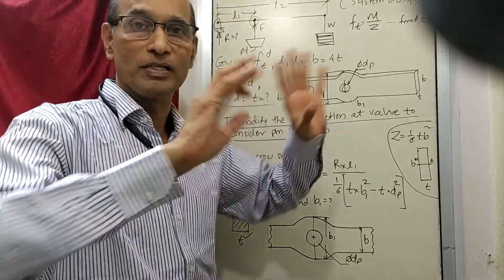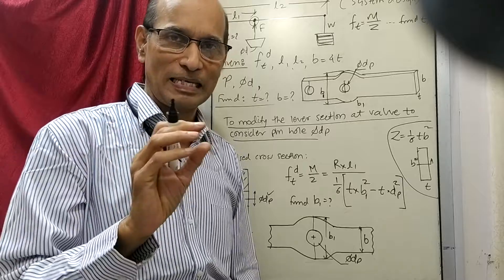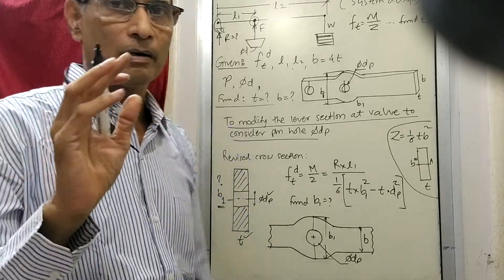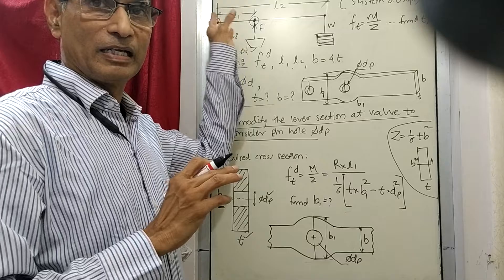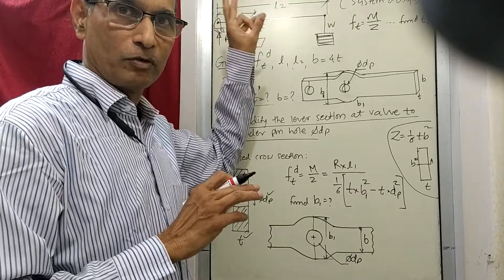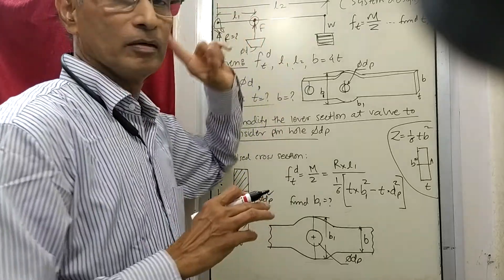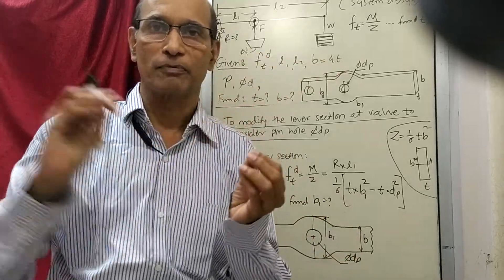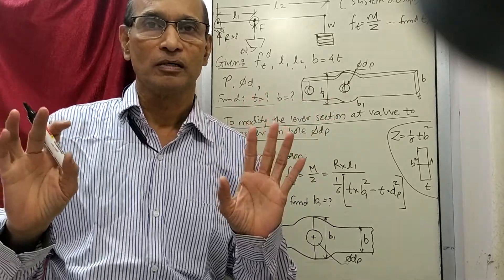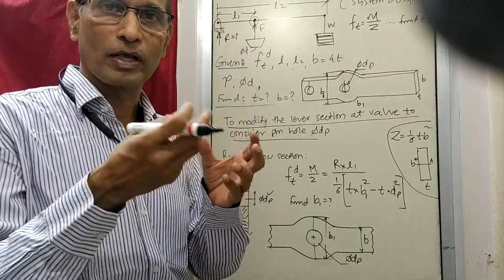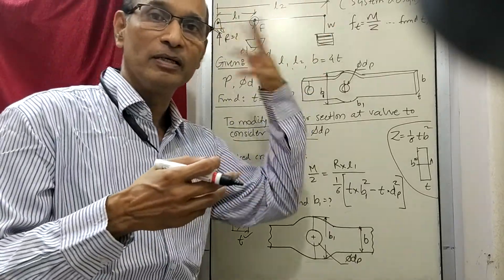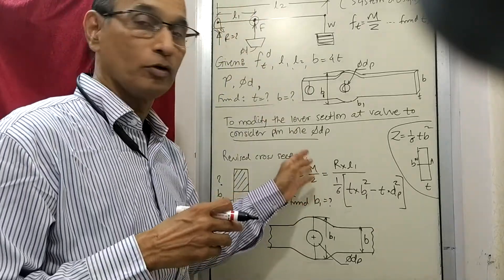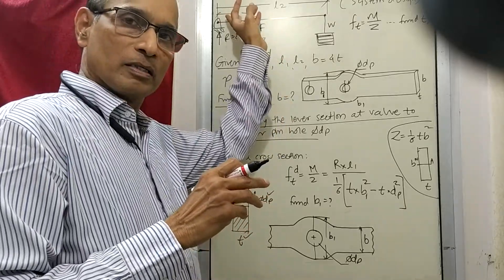That doesn't mean the size of the pin is zero just because the moment is zero. We should have some suitable size. According to standardization principles, we are going to provide one bracket here and fit a pin of the same dimension as the other pin. Both pins will be the same size, so you don't need to keep two different sizes. One size of pin, quantity two, is sufficient — one used here, one used there, with extras available for future breakdown situations.